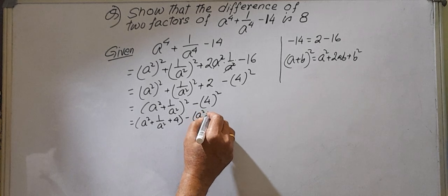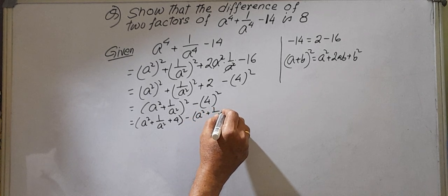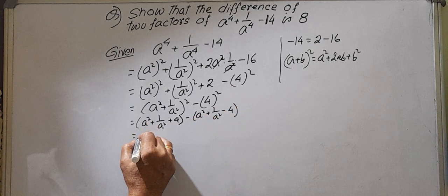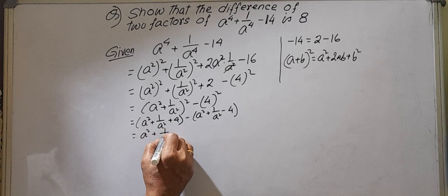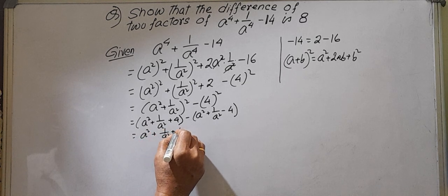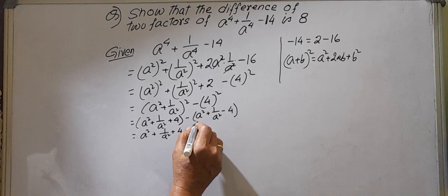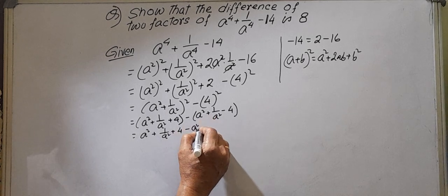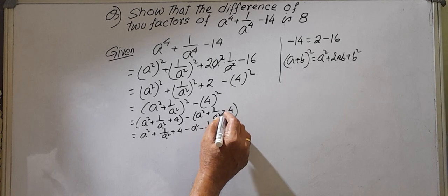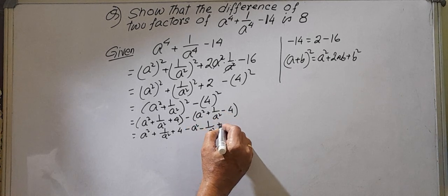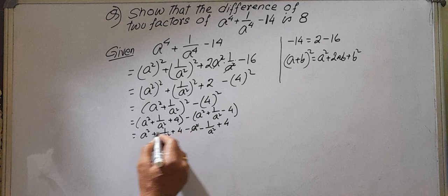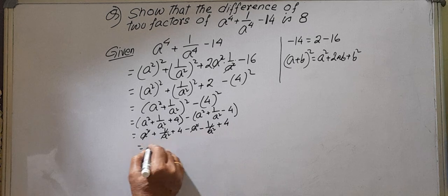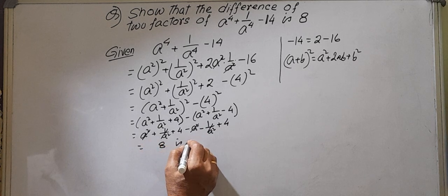So first factor is A square plus 1 by A square plus 2, then minus, A square plus 1 by A square minus 2. Now you see, after opening this bracket: A square plus 1 by A square plus 2, and this is minus A square. Because when it's opened outside the bracket, minus times minus A square, this is plus, this becomes minus, minus times minus 1 by A square, and minus times minus plus, this is plus 2. So A square is negative, this is positive, 0. This is positive, this is negative, this is 0. 2 plus 2 is 4. And it is proved, 8 is proved.